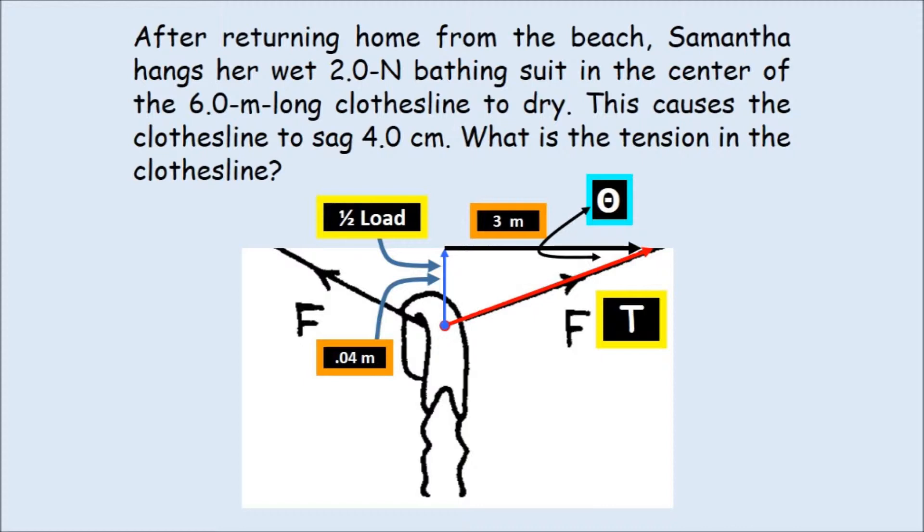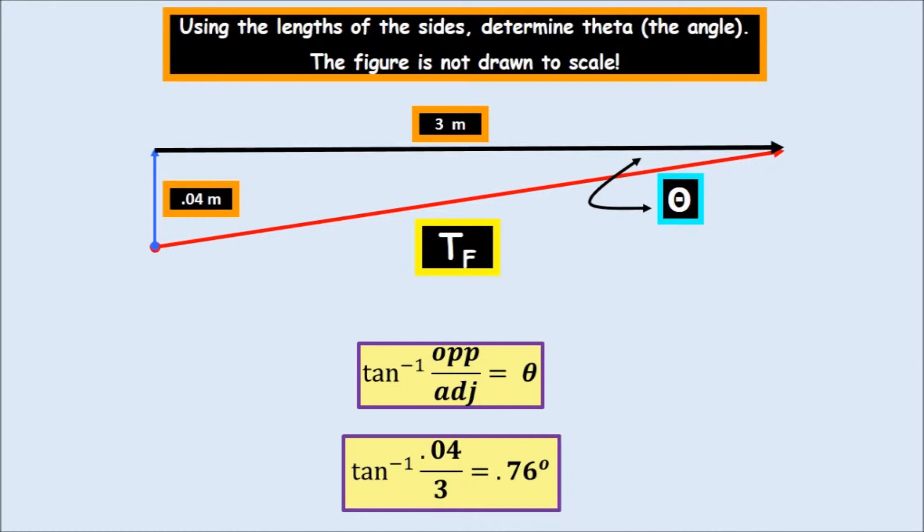Find the angle. The angle will be the arc tangent of 0.4 opposite over adjacent, 0.04 meters over 3 meters. And that will be the actual angle. And then from there, we can find out the tension in the line, the red line. So we see that the answer is 0.76 degrees.